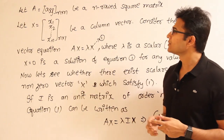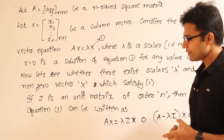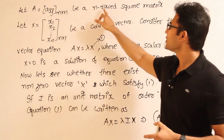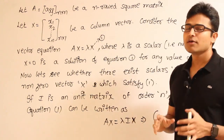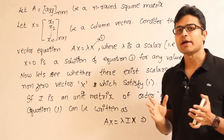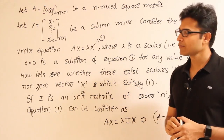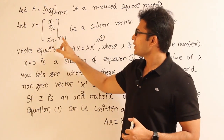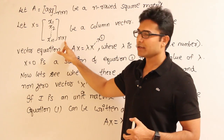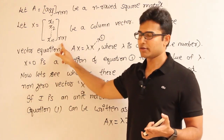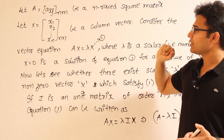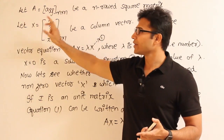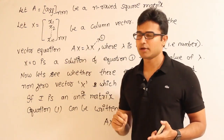Let capital A be an n by n square matrix, and capital X be an n by 1 matrix — which means X is a column vector. So we have a square matrix A and a column vector X.